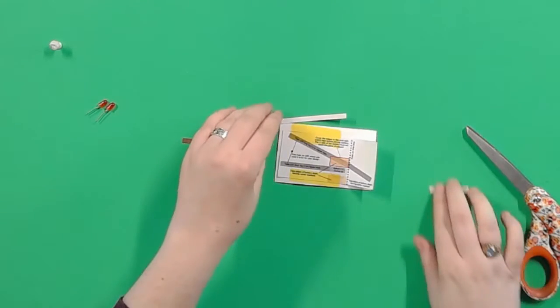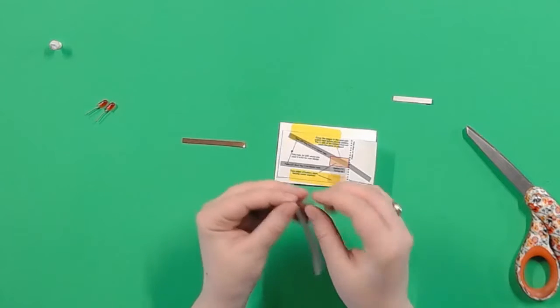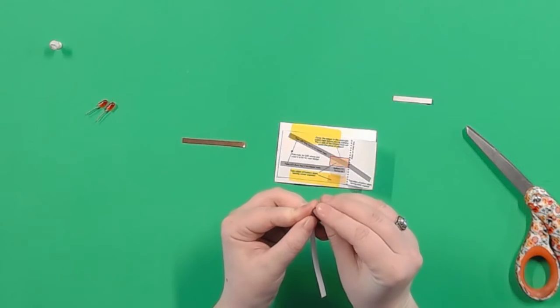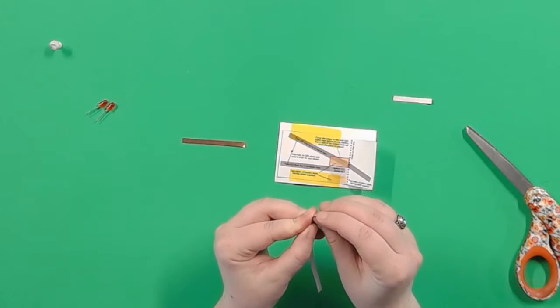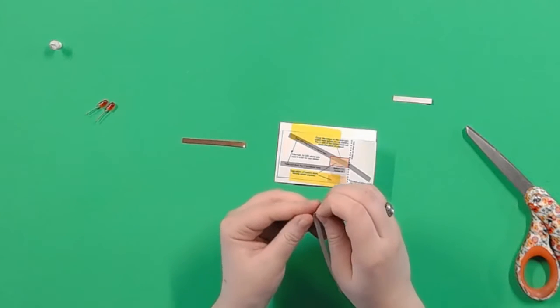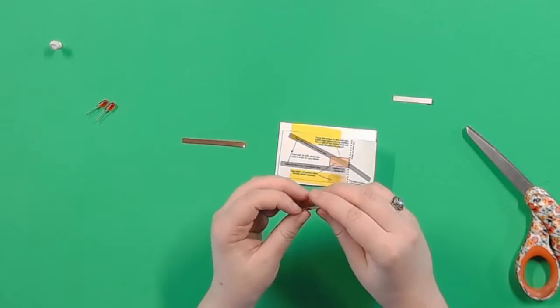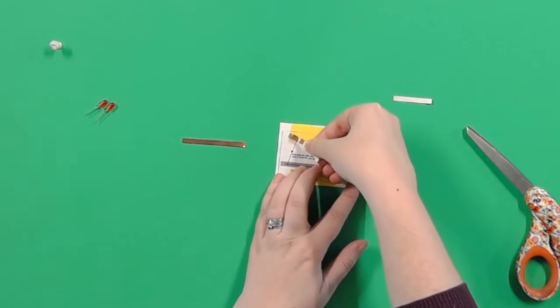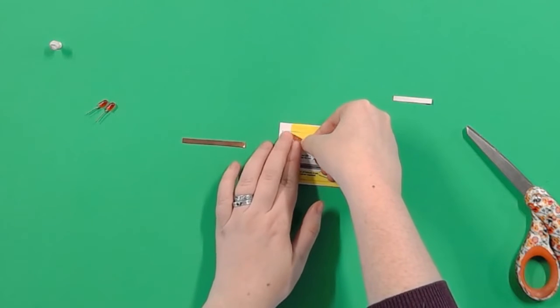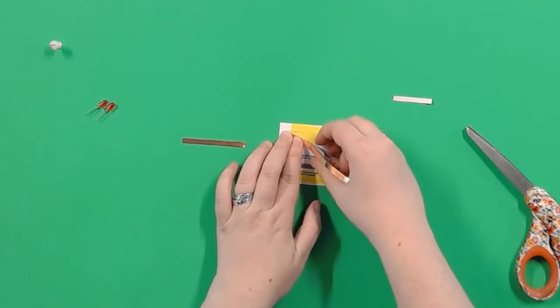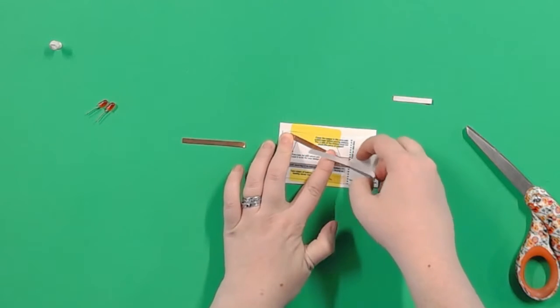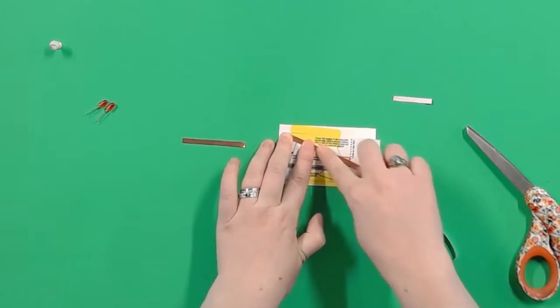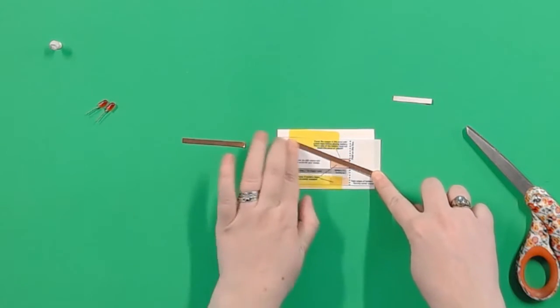Now peel off the back of your long tape, but only a little bit of it. This is easier if you have nails. Stick that little sticky bit to the end of the long gray line. And then slowly unpeel the rest of the backing while you press the tape down on the card. It might get a little bit wrinkly, but that's okay. We just want to try to get it as smooth as we can.